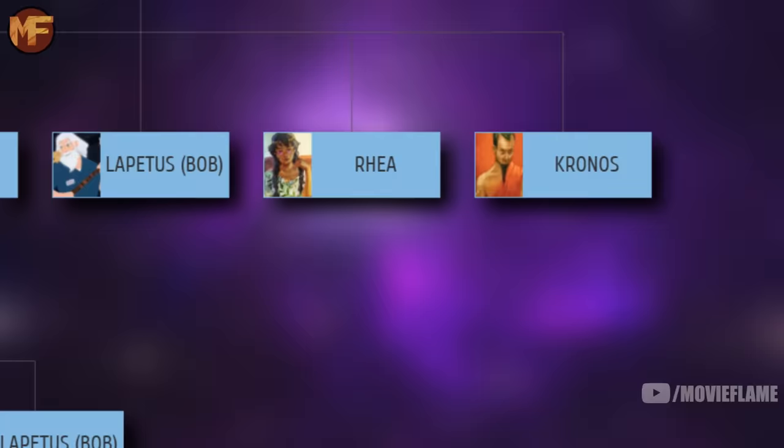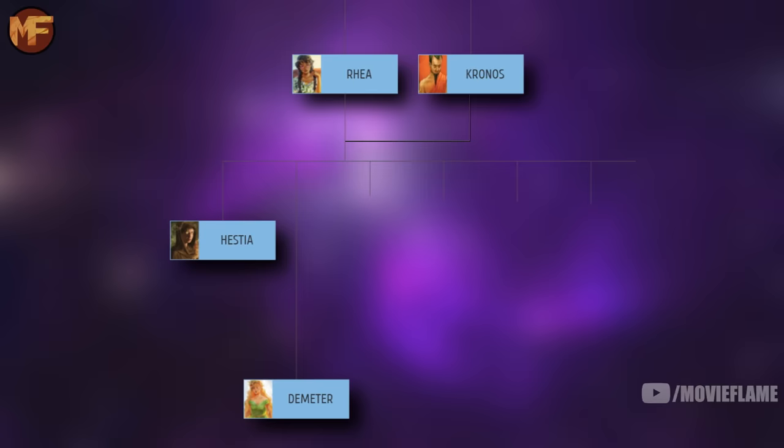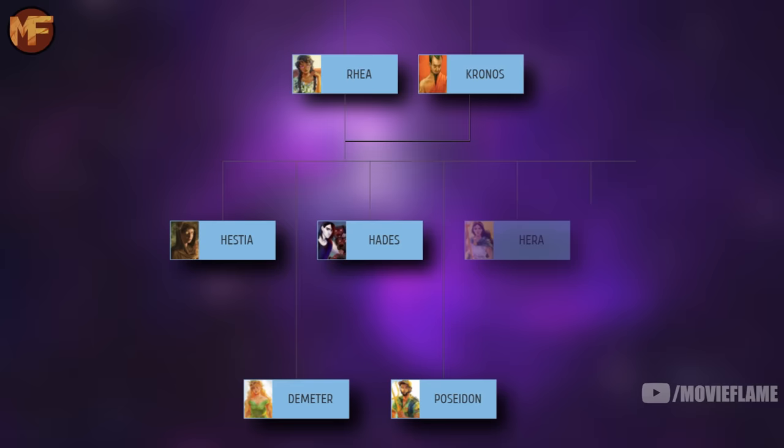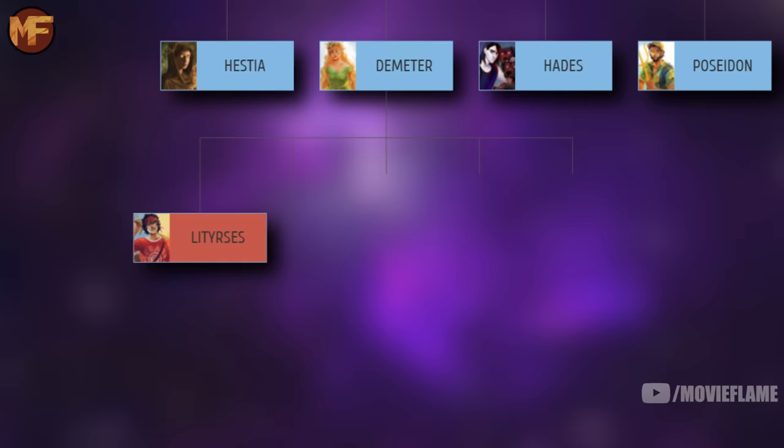Going back to Atlas's aunts and uncles, Rhea and Kronos got together, and their marriage is huge. Kronos, the main villain in the original Percy Jackson books, had six kids with the Titan Rhea: Hestia, goddess of the hearth; Demeter, goddess of agriculture; Hades, god of the underworld; Poseidon, god of the sea; Hera, who would later be queen of the gods; and Zeus, who would later be king of the gods.